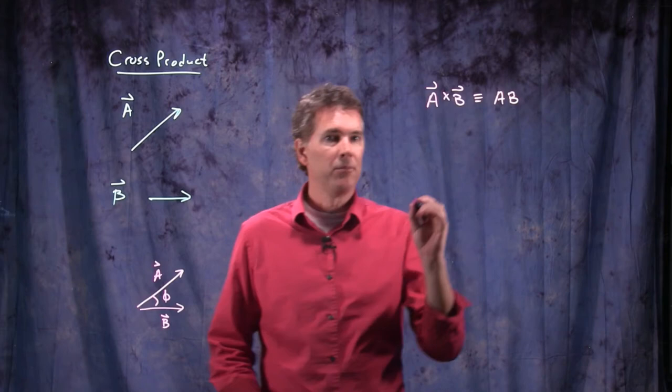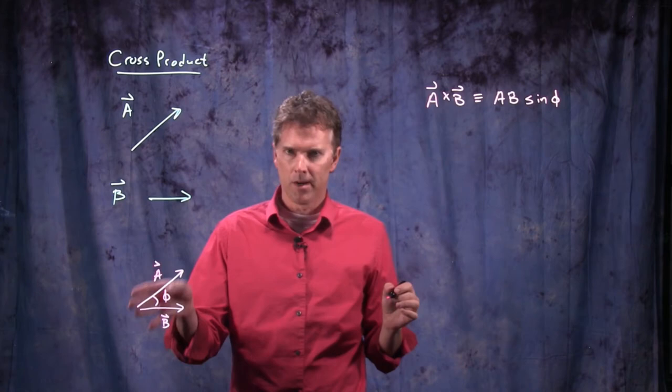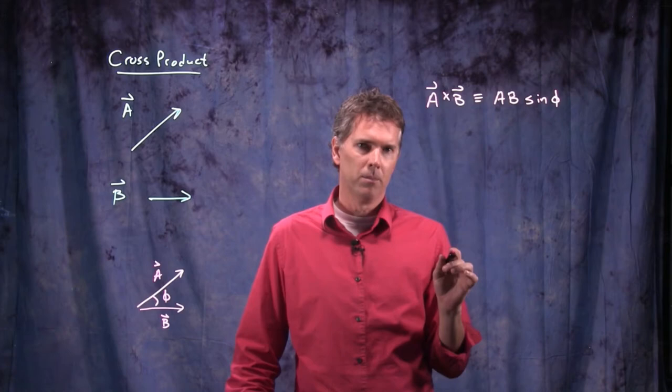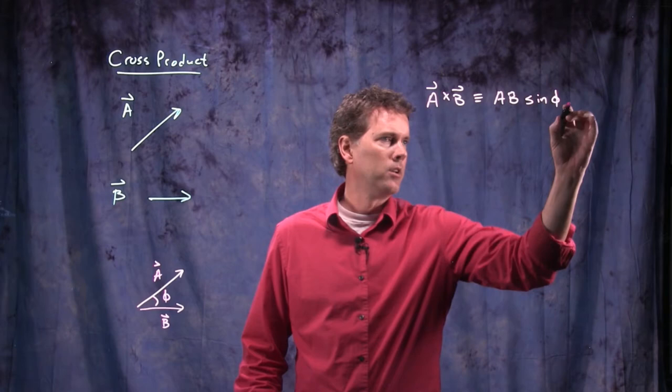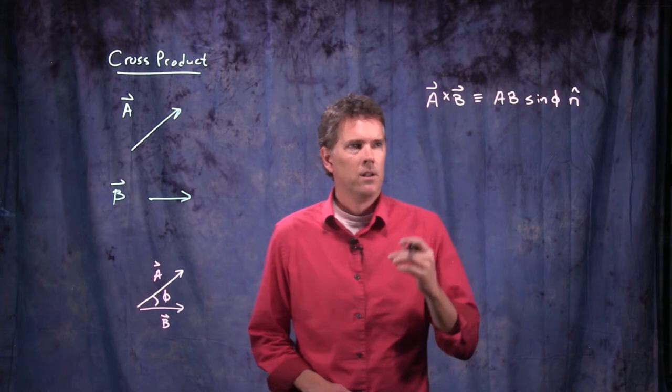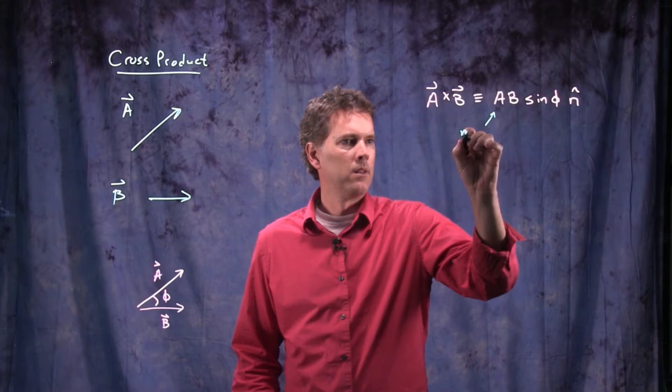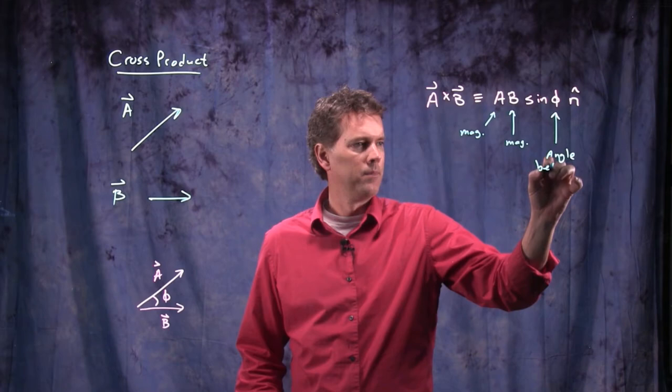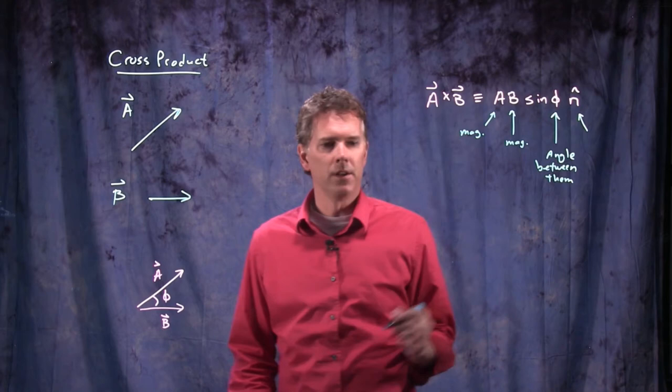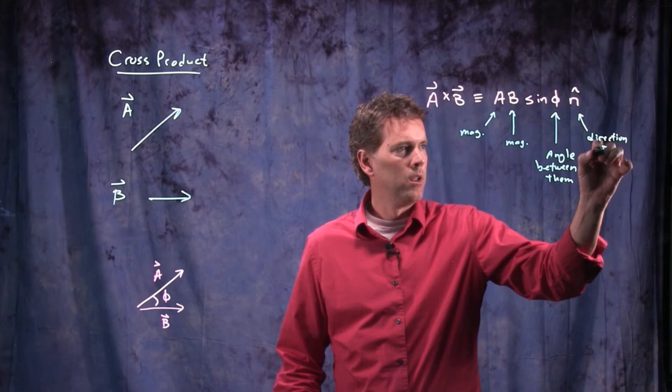The cross product A cross B is defined as the following. It's magnitude of A times magnitude of B times the sine of the angle between them. Remember when we did the dot product we had cosine. Now it's the sine of the angle between them. But there's one more thing that's really important here, which is cross product is a vector quantity. This that we've written so far is just a magnitude. And so we need to identify a direction. And so for the direction we do an N hat right there. This is of course the magnitude of vector A. This is the magnitude of vector B. This is the angle between them. And this is the resultant direction.